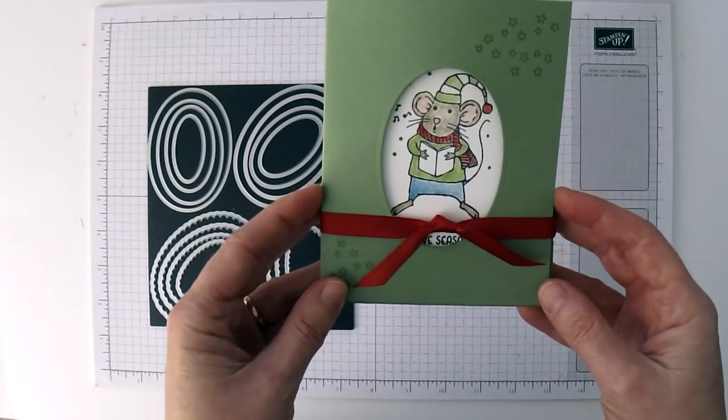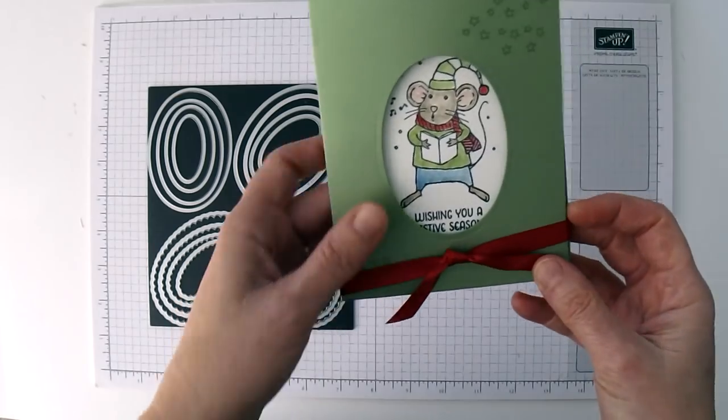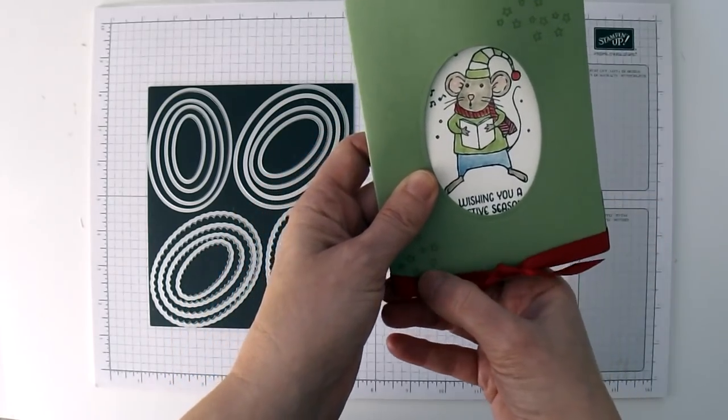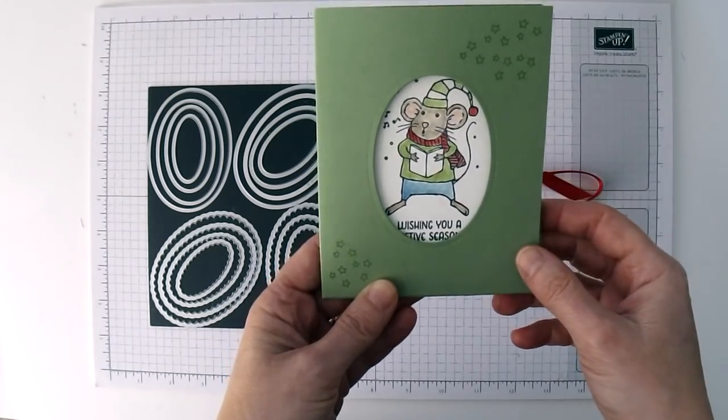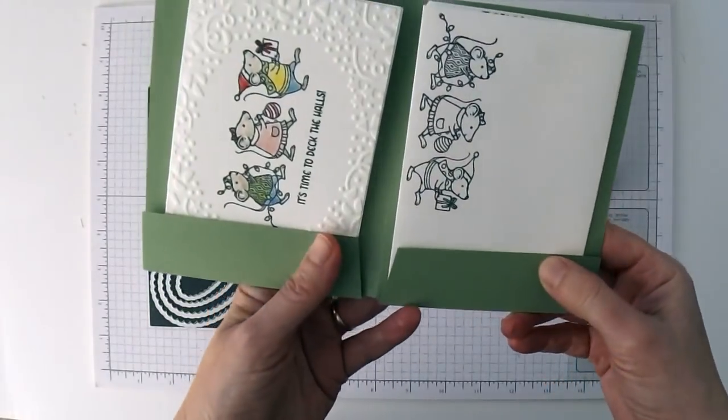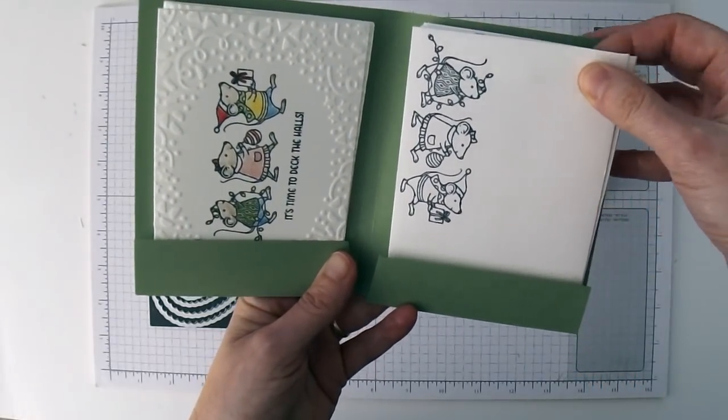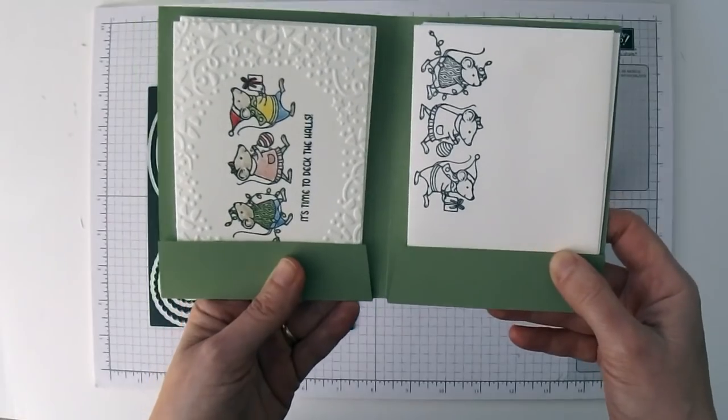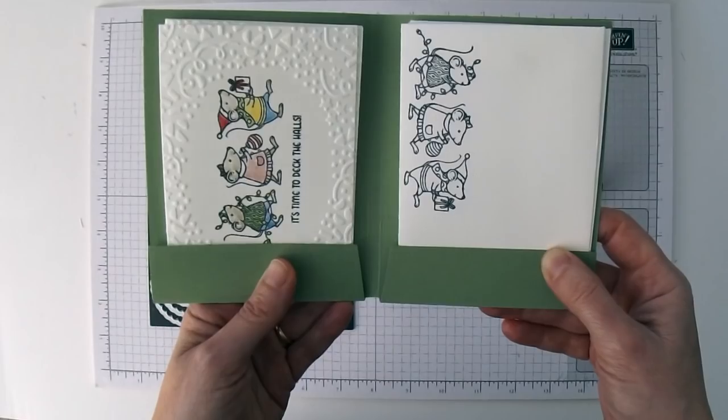Here is the note card holder. I've got this little piece of ribbon that's wrapped around here that can just slide off and that holds it closed. Then we've got this little window that I cut using the layering oval framelits, and then when you open it up on the inside you've got your little note cards and on the other side you have your envelopes. The best part of this note card holder is that it's really easy to make. So let me show you how.